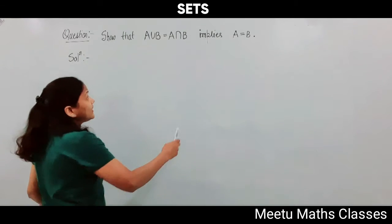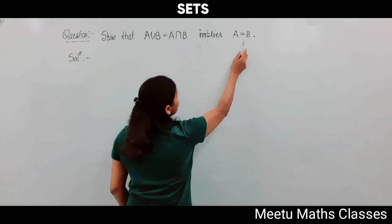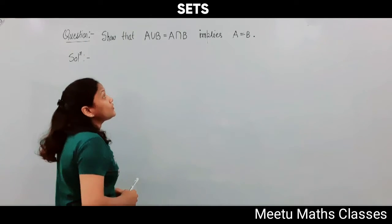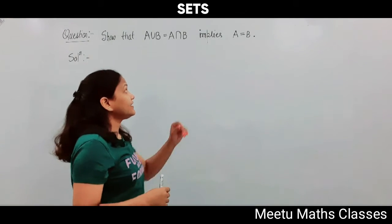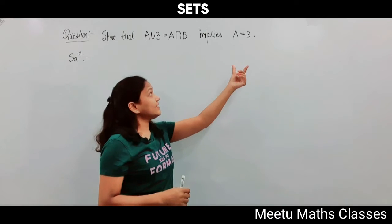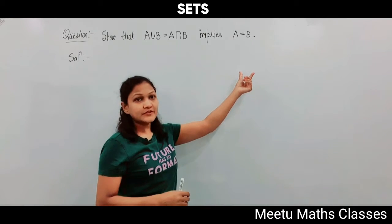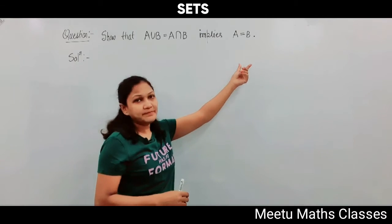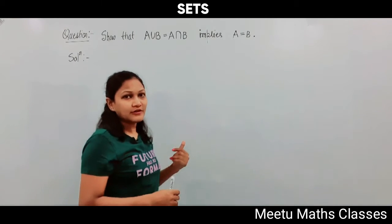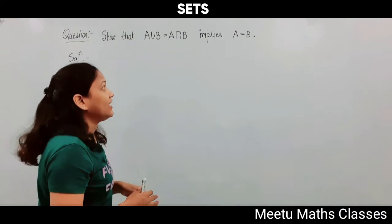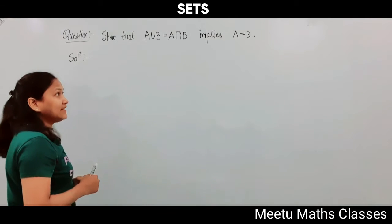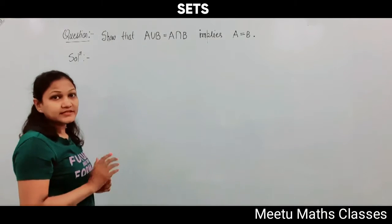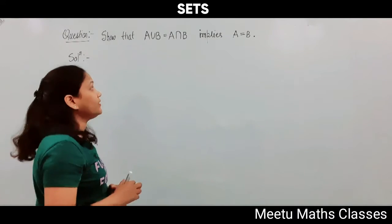To show that the two sets are equal, we are going to prove that A is a subset of B and B is a subset of A, and that will imply that the two sets are equal.